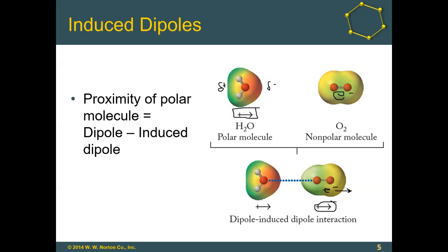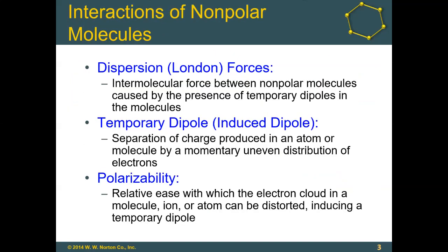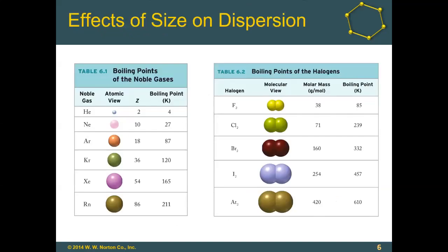Let's look at how the size and number of electrons affects dispersion forces. Going back to polarizability — the ease with which the electron cloud can be shifted — the electron cloud will be shifted more easily for larger atoms. But notice that larger atoms also have more electrons. So more electrons increases the strength of the dispersion forces, and larger size also means stronger dispersion forces.